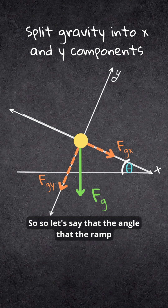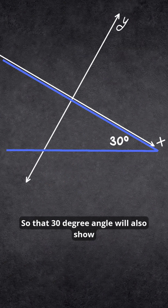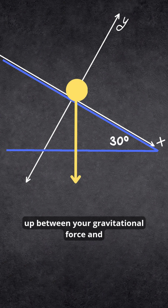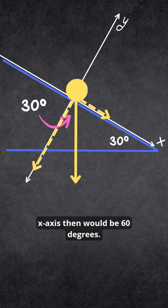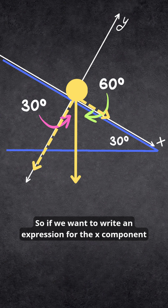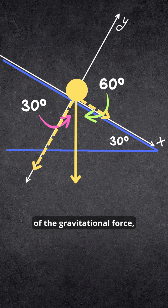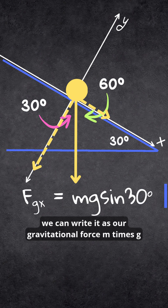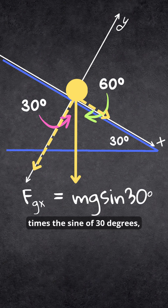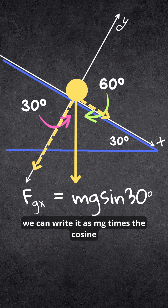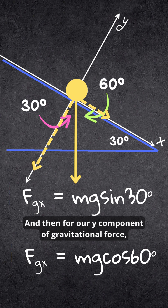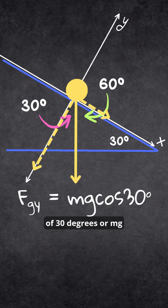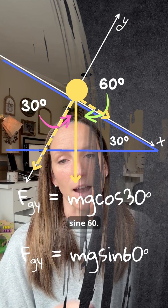Let's say the angle the ramp makes with the horizontal surface is 30 degrees. That 30-degree angle also appears between your gravitational force and the tilted y axis. The angle between the gravitational force and the x axis would then be 60 degrees. The x component of gravitational force can be written as mg times sine 30 degrees, or equivalently mg times cosine 60 degrees. The y component can be written as mg times cosine 30 degrees, or mg times sine 60 degrees.